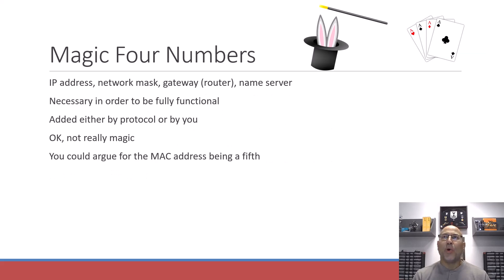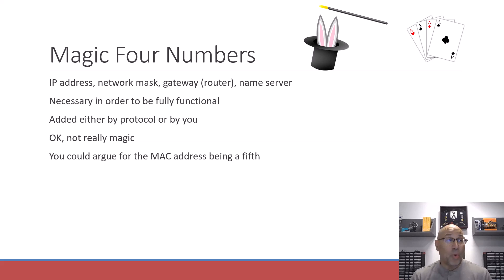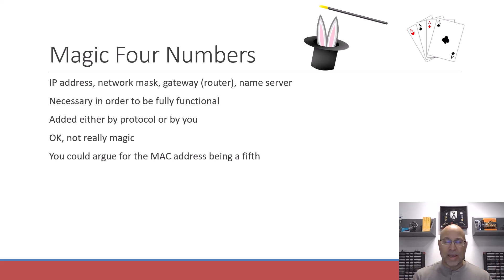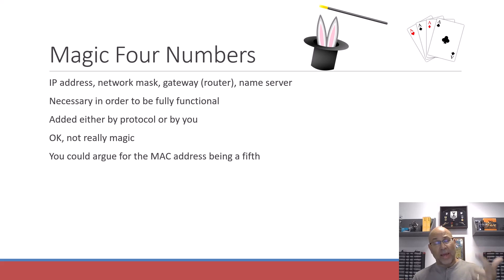Now in an ode to actual networking, here are some numbers we can actually use in our networks today. Let's get back to some actual networking. Here are four magic numbers that are important anytime you're dealing with networking: the IP address, the network mask, your gateway, and a name server or DNS.